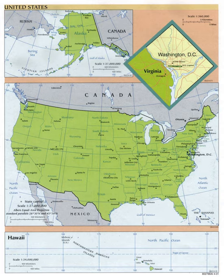The insular areas of the United States are those U.S. territories that are neither a part of one of the fifty states nor the federal district. They are classified by whether they are incorporated—part of the United States proper—and whether they have an organized government through an organic act passed by the U.S. Congress. Insular areas are administered by the Department of the Interior's Office of Insular Affairs. Since the creation in 1787 of the first territory beyond the existing states, the Northwest Territory, the federal government has established numerous organized incorporated territories with some political autonomy. These jurisdictions subsequently became states. Thirty-one of the current fifty states were organized incorporated territories, or part of one, before their admission to the Union. No incorporated organized territories have existed since 1959, when Alaska and Hawaii joined the Union.